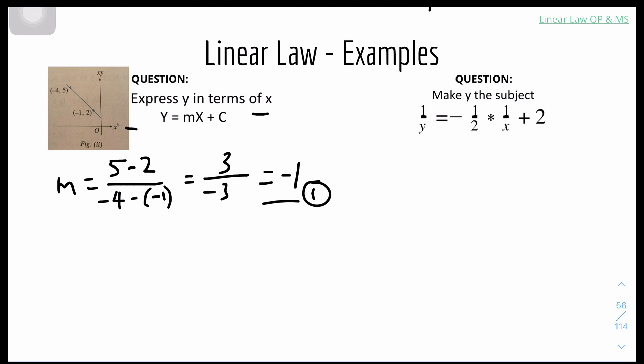So we have big Y equals minus X plus c. Notice how I still remain it as big Y and big X. So we have to do a condition where x is minus 1, y is 2, because that's one of the points. It will be 2 equals 1 plus c, and therefore c equals 1. So putting it all together, you get big Y equals minus X plus 1.